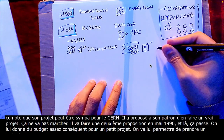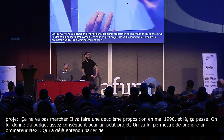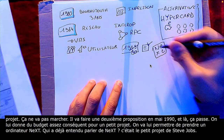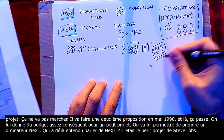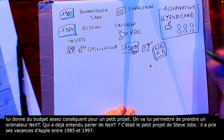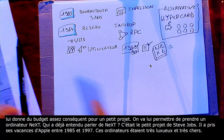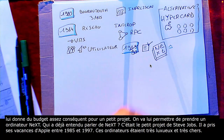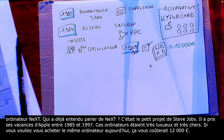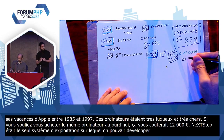Qui a déjà entendu parler de NeXT ? C'était le petit projet de Steve Jobs quand il a pris ses vacances d'Apple, entre 85 et 97. Ces ordinateurs-là étaient extrêmement luxueux, extrêmement chers. Pour vous dire, à euro constant, si vous vouliez vous acheter le même ordinateur aujourd'hui, ça vous coûterait 12 000 euros. Et pourquoi cet ordinateur ? Simplement parce que NeXTSTEP était le seul système d'exploitation sur lequel on pouvait développer des interfaces utilisateurs graphiques assez facilement.